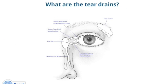Where do tears drain? Our tears drain away from the eyes through tiny holes called puncta in the upper and lower eyelids. Then they enter little canals called canaliculi, which join and enter the tear sac — also called the lacrimal sac — where they flow down through the nasolacrimal duct into your nose. This is why our noses run when we cry.